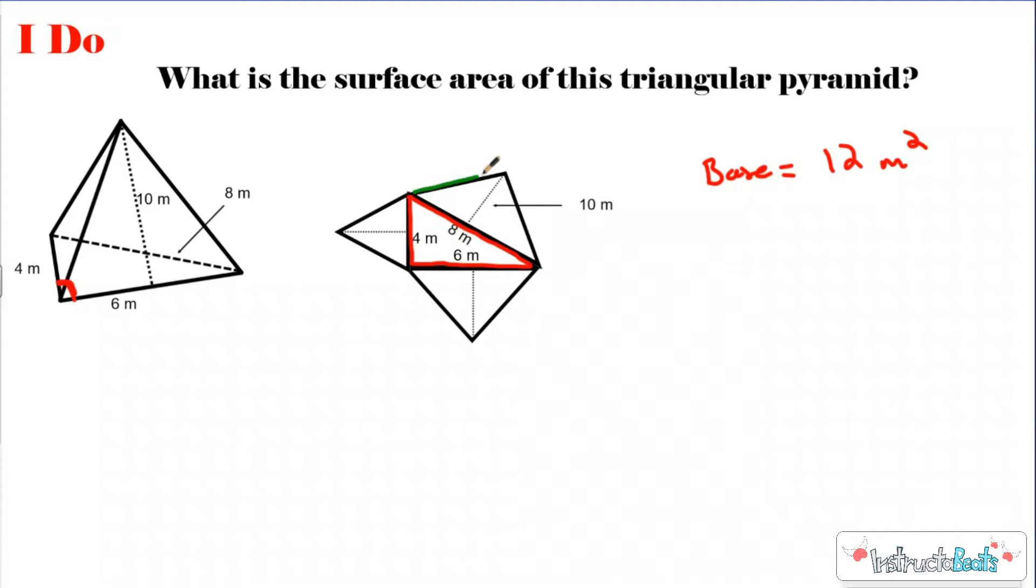If I did this one in green, I'm just going to color code it so you can see. My green lateral face is a triangle, and I see the base of this triangle is 8, and my height is 10. So, if I do 1/2 times 8 times 10, I'm going to get 40. My green triangle has an area of 40 meters squared.